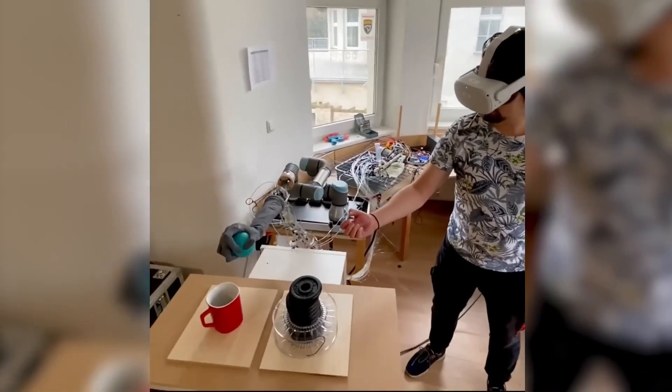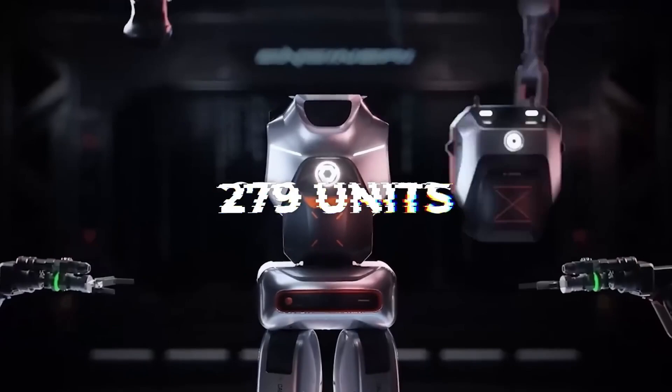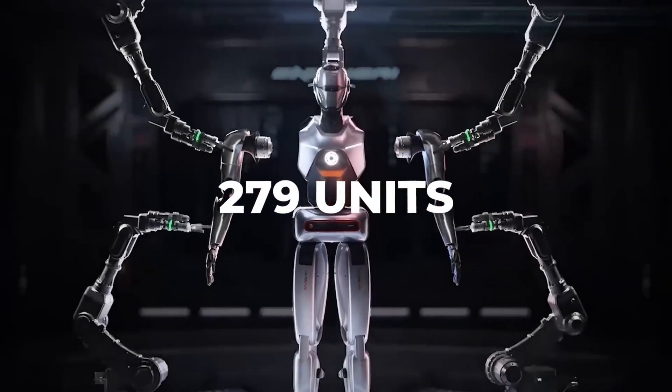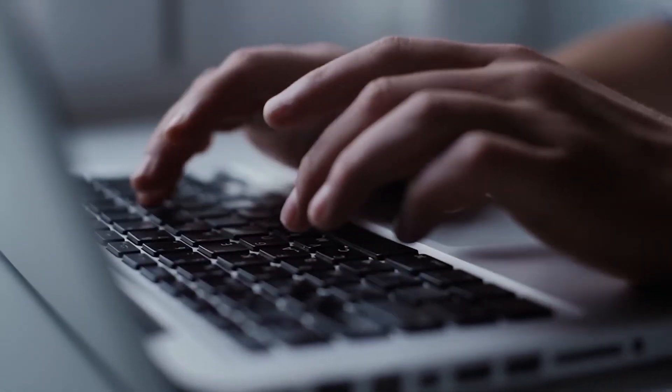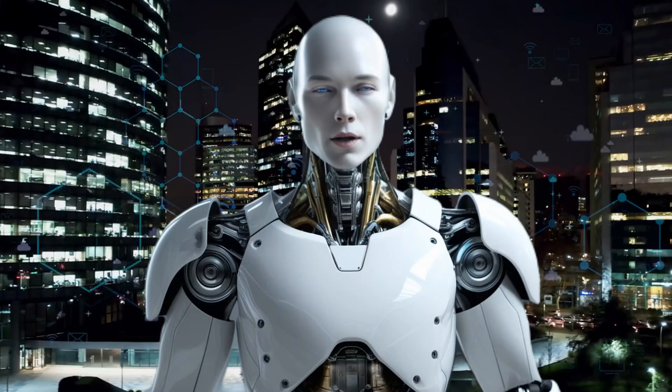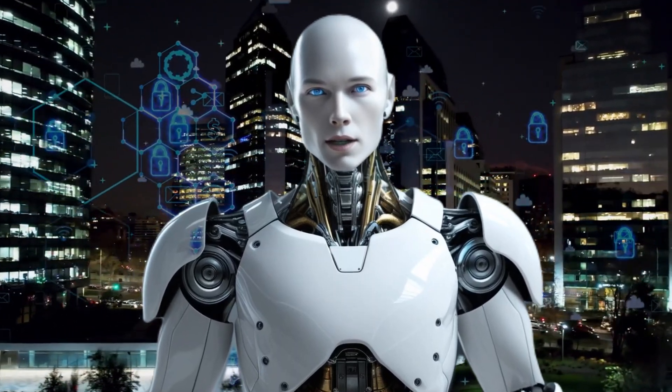But Clone Robotics is taking a smart approach. They're starting small with a limited production run of 279 units. This allows them to focus on refining the technology and gathering feedback from early adopters. It's a strategic move that shows they're serious about delivering a product that works, not just one that looks good on paper.